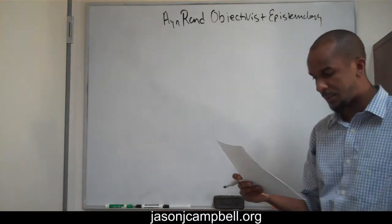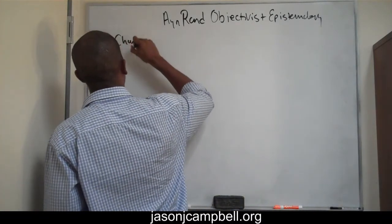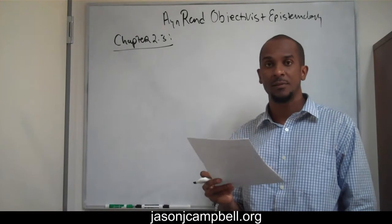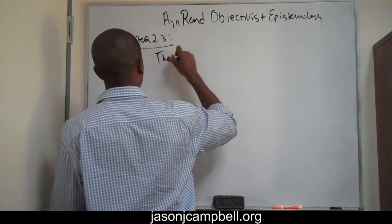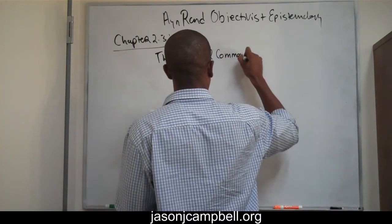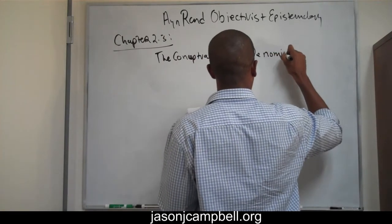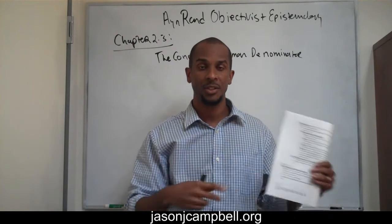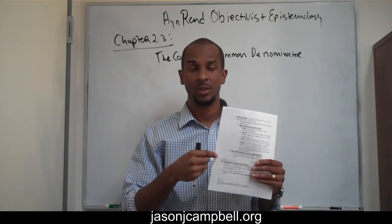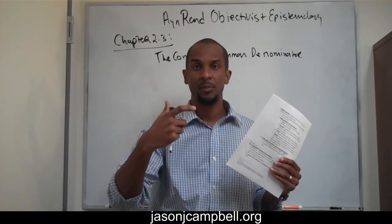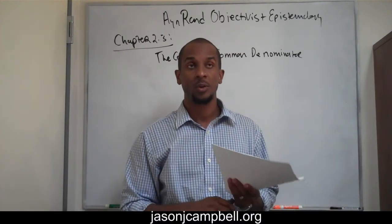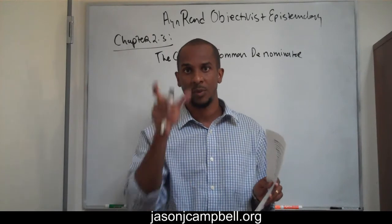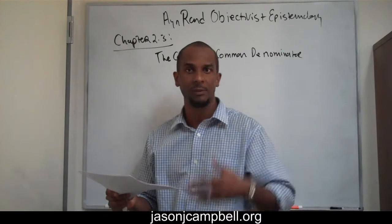This is Ayn Rand's Objectivist Epistemology, and this is the final section of Chapter 2 — Chapter 2.3 — where she introduces the idea of the Conceptual Common Denominator. Also, before I begin, the notes I'm going to be using to guide the discussion have been made available to you. If you want to follow along, print out the notes — just click the banner that pops up on the video or the link in the description field. There's also a link on the PDF to the playlist of all the videos on Ayn Rand's Introduction to Objectivist Epistemology.